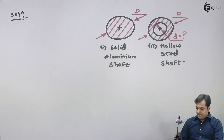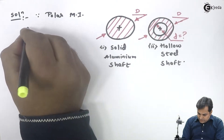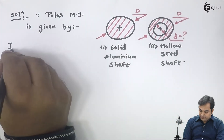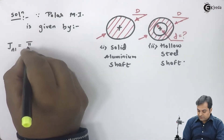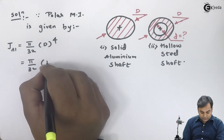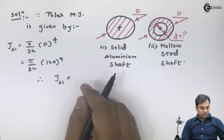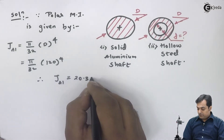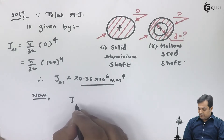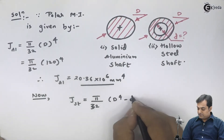First I will calculate the polar moment of inertia separately, as this will help in solving the question. The polar moment of inertia J for aluminium, which is a solid shaft, is given by pi/32 times the diameter raised to 4. Substituting diameter as 120 mm, J for aluminium comes out to be 20.36 × 10^6 mm^4. Next, the polar MI for steel, which is hollow, is pi/32 times (D^4 minus d^4).